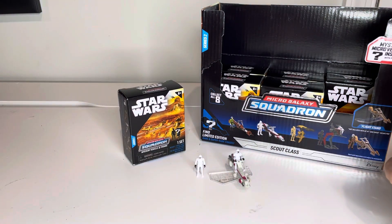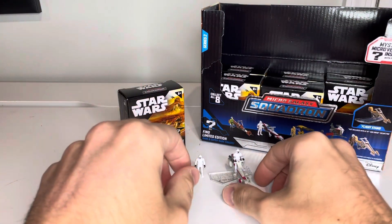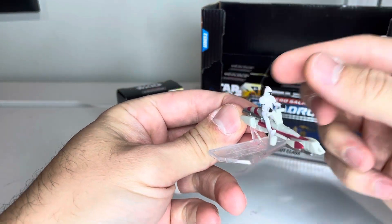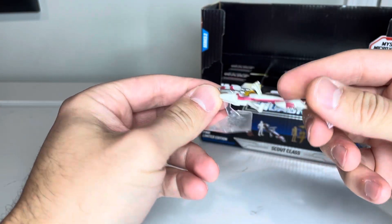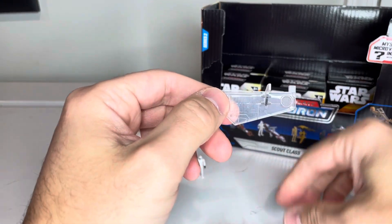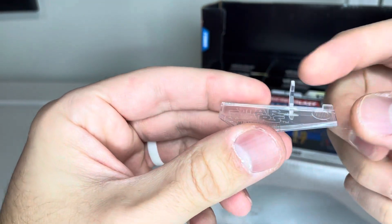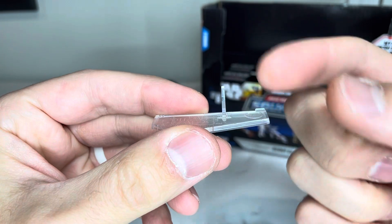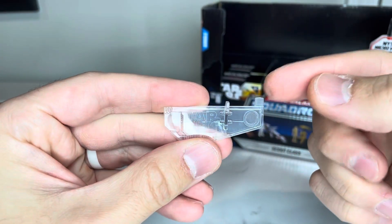Let's take a look at the BARC speeder. This comes with three different things: you get your Phase 1 clone, you get the BARC speeder itself, and you get your stand. Starting with the stand, it has the two little pegs on it just like all of the other stands, so you can have it in the position I had it in or you could put it on the side like it's flying around.